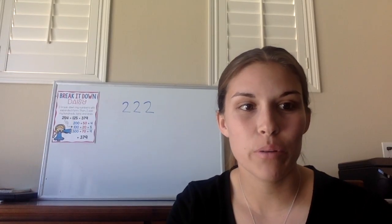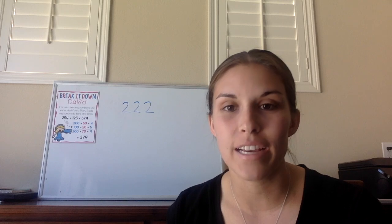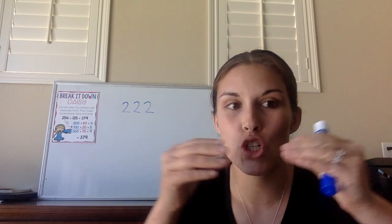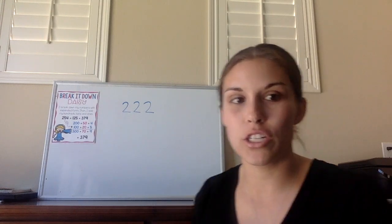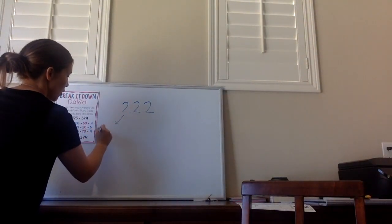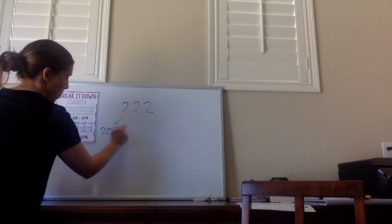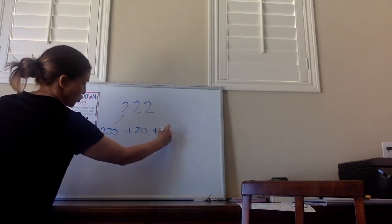Welcome back, boys and girls. I hope you were able to grab all your materials needed for lesson three. In this lesson today, we're going to learn how to add three-digit numbers using expanded form. Remember, when we expand a number, we're stretching it out to show the value of each digit. So the expanded form of 222 would be 200 plus 20 plus 2.